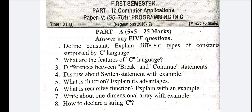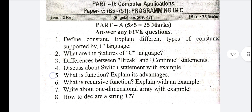Define constant and explain different types of constants supported by C language. The constant definition covers different types. In C language, about 20 types are supported.